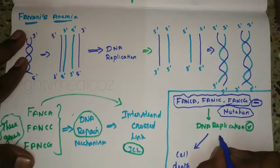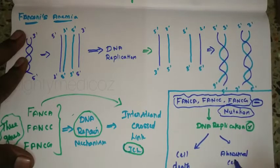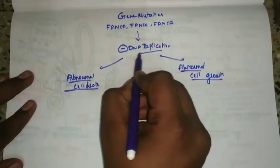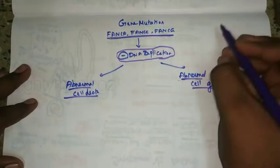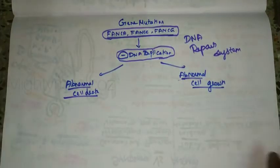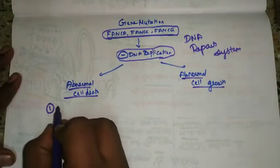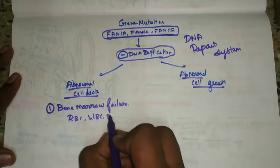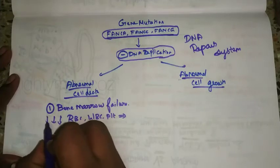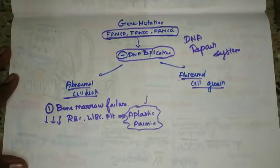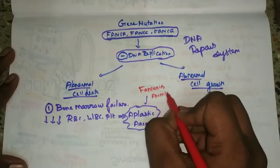This leads to either abnormal cell death or abnormal cell growth. The abnormal cell death results in bone marrow failure, which is called aplastic anemia. This condition is known as Fanconi's Anemia.